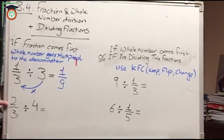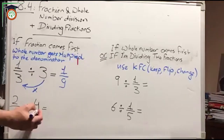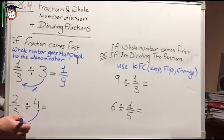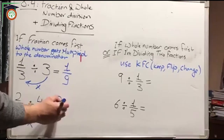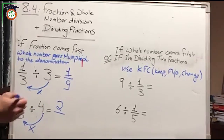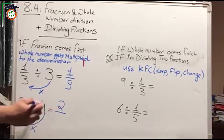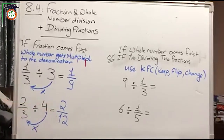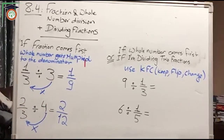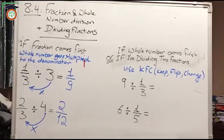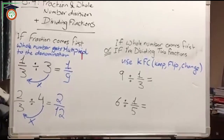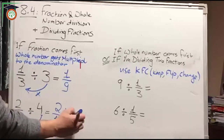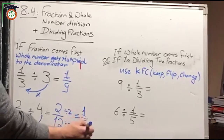Now for this question, I have 2 over 3 divided by 4. Where does the 4 go? It goes to the denominator — it gets multiplied to the denominator. That means the numerator stays the same, and the denominator is 3 multiplied by 4, which is 12. So I get 2 over 12. Is this the simplest form? Where do 2 and 12 meet in a times table? They meet at 2, so I divide both by 2 and get 1 over 6.